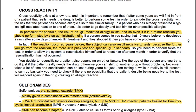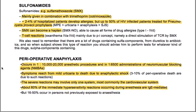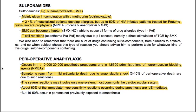Sulfonamides, such as sulfamethoxazole — mainly given in combination with trimethoprim as cotrimoxazole — cause allergies in around 4% of hospitalized patients, but up to 50% of HIV-infected patients treated for Pneumocystis jirovecii prophylaxis. Sulfamethoxazole can become a hapten capable of causing all forms of drug allergies. These reactions are mainly due to a p-i concept — a direct stimulation of the TCR by sulfamethoxazole. You also need to remember that many drugs contain sulfa components, from diuretics to antibiotics, so when a subject shows this type of reaction, you should advise testing for all sulfa-containing drugs.